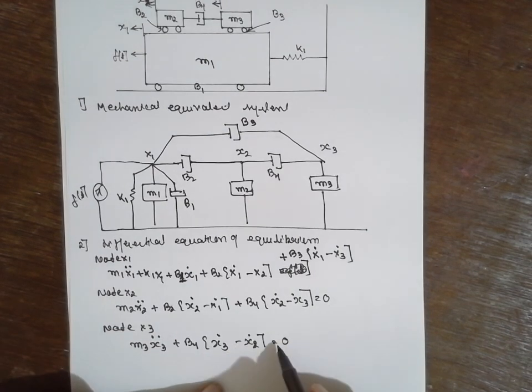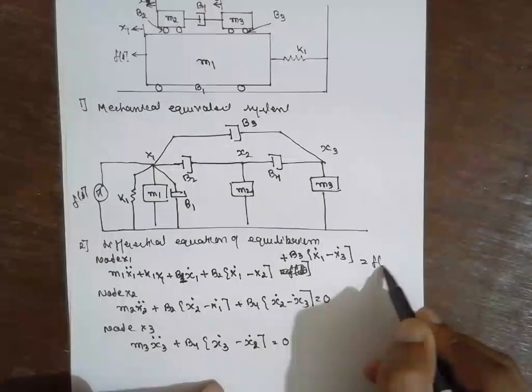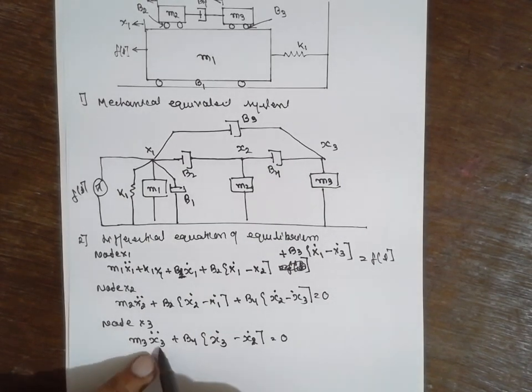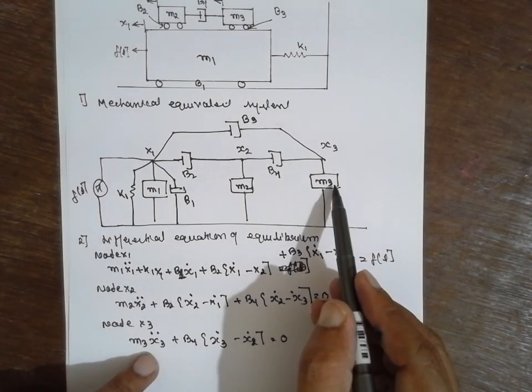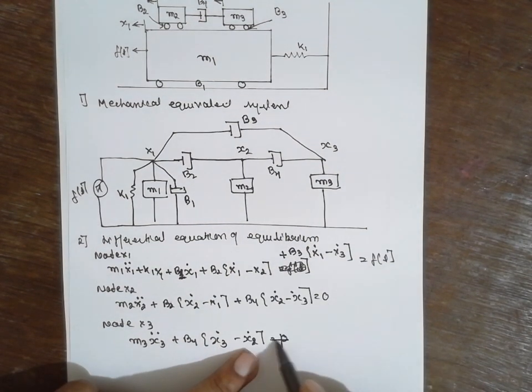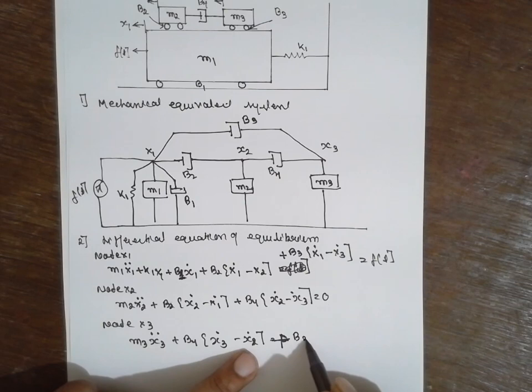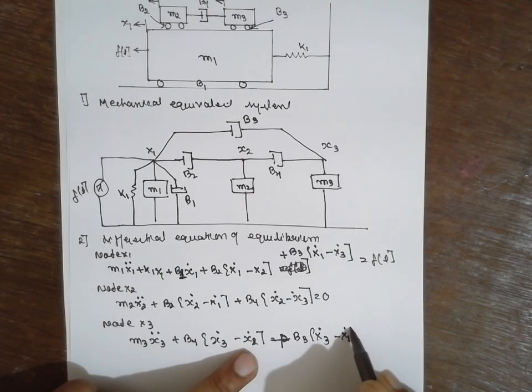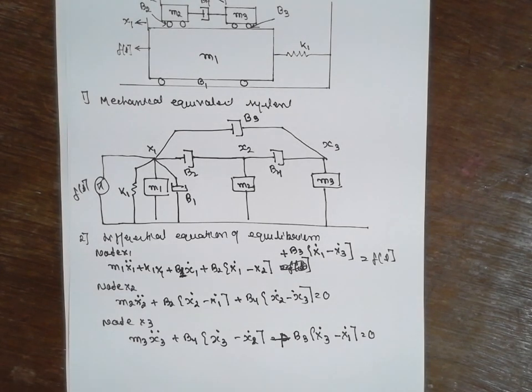Now this last one: m3·ẍ3 + b4·(ẋ3 - ẋ2) + b3·(ẋ3 - ẋ1) = 0. This way you have to solve the problem.